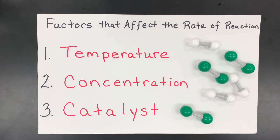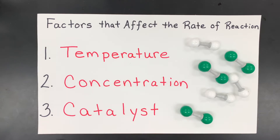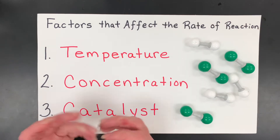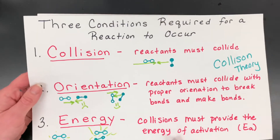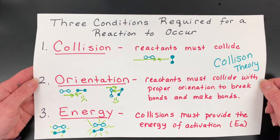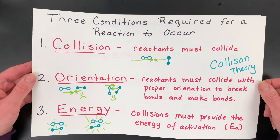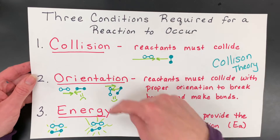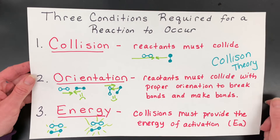There are three factors that affect the rate of a reaction: temperature, concentration, and catalyst. In this video, I'm going to go over how these alter the reaction rate, as well as why. Before we can go over the why, you will need to have the three conditions required for a reaction to occur that I went over in my previous collision theory and reaction rate video, because we're going to talk about how each factor we changed altered one or more of these conditions.